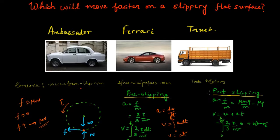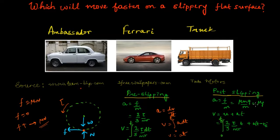When slipping or skidding happens, the force of friction becomes equal to μN = μmg. So the linear acceleration becomes friction/m = μmg/m = μg. Post-slipping, the acceleration is constant at μg — unlike pre-slipping where acceleration increased with torque.